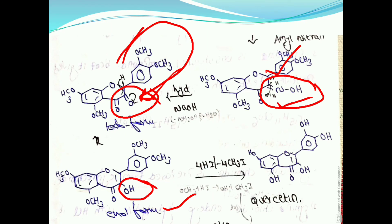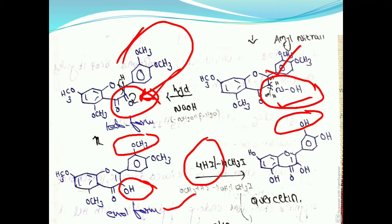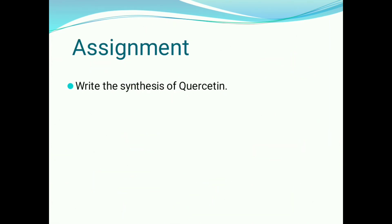This enol form is treated with hydrogen iodide. In this reaction, the OCH3 groups are converted into OH groups, and finally quercetin is formed. Students, your assignment is to write the synthesis of quercetin. In the next class we will discuss about cyanidin or cyanidin chloride. Thank you.